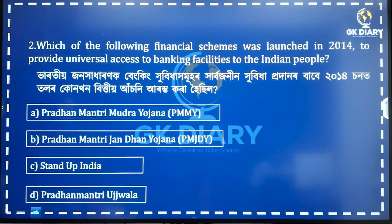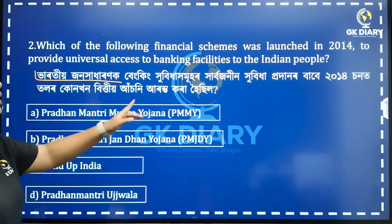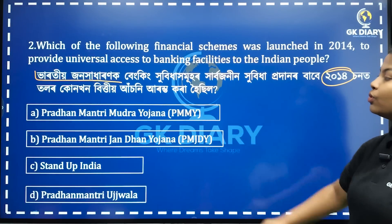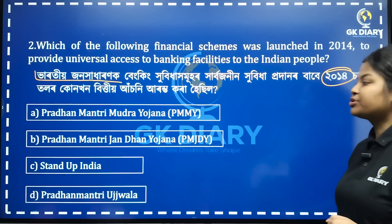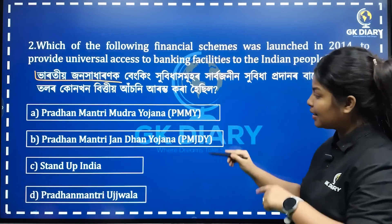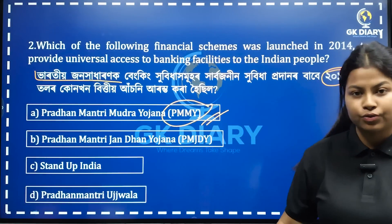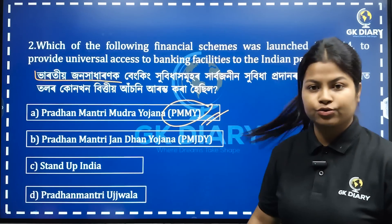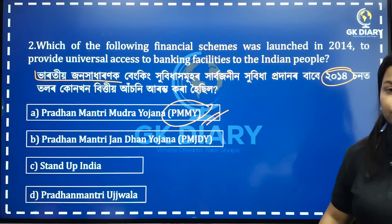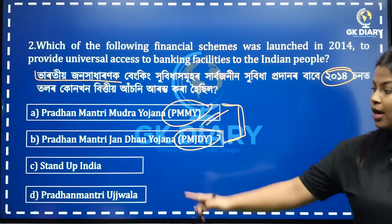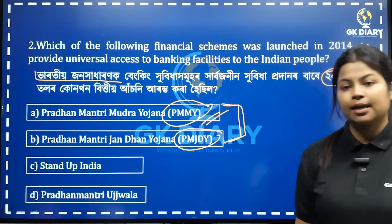Which of the following financial schemes was launched in 2014 to provide universal access to banking facilities to the Indian people? Option A should be Option B. Option C should be Stand Up India and Option D should be Ujjala.